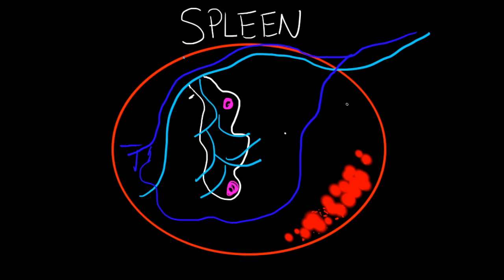The spleen is the location where immune responses are mounted against antigens in the blood, and it's also the region where old red blood cells are phagocytosed and recycled.